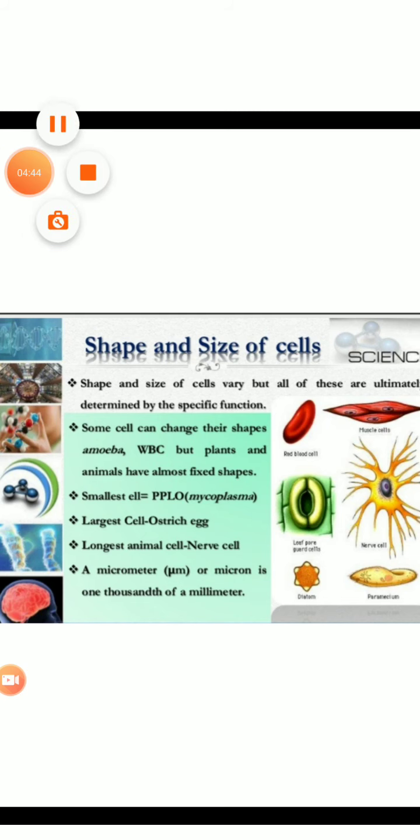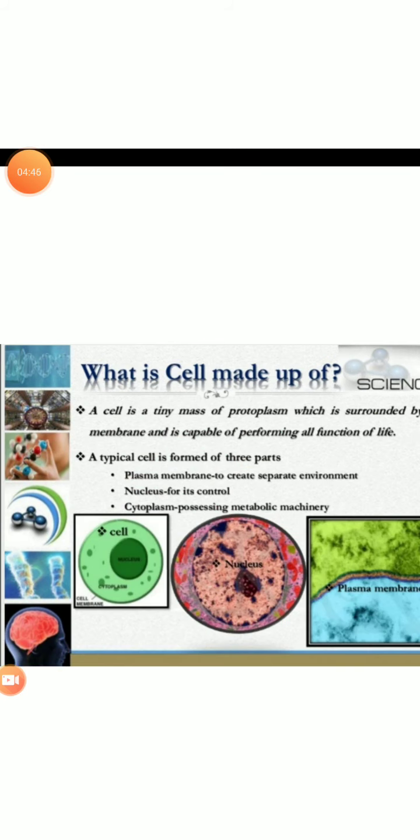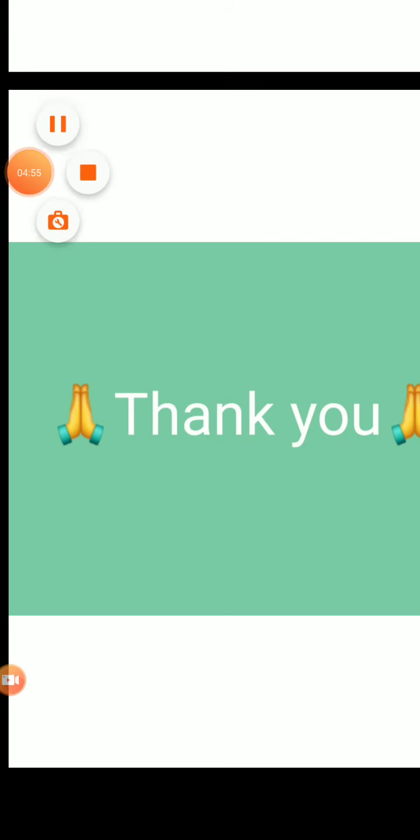You can simply say that cell is made up of three parts: plasma membrane, also known as cell membrane, nucleus, and cytoplasm. So I hope the concept is clear to you.